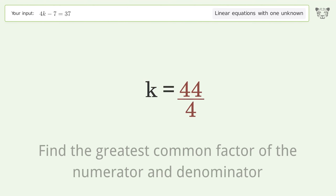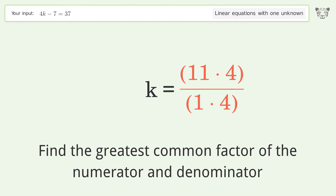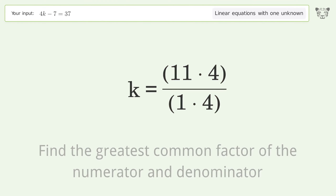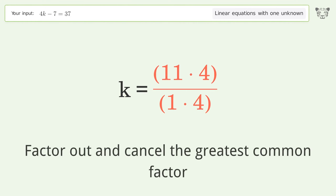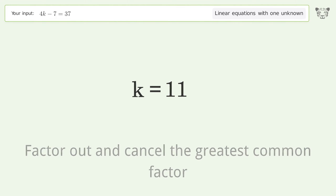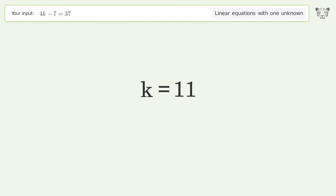Find the greatest common factor of the numerator and denominator, then factor out and cancel the greatest common factor. And so the final result is k equals 11.